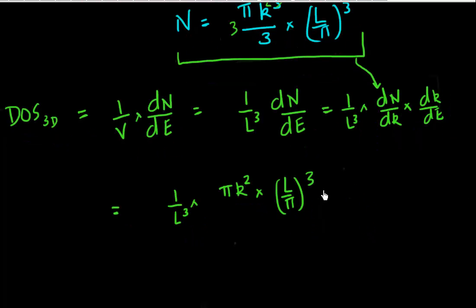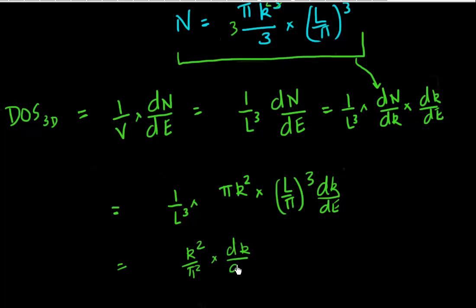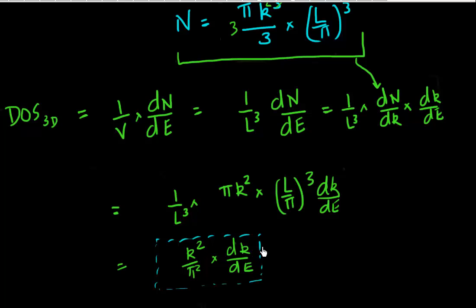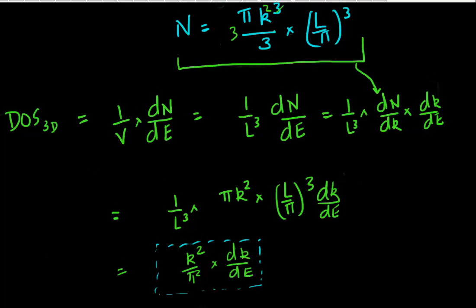So what it all boils down to, after rearranging, is: density of states equals (k²/π²) × (dk/dE). As long as I can find dk/dE, I have my density of states. And this looks like something derived earlier from the E-K relationship.